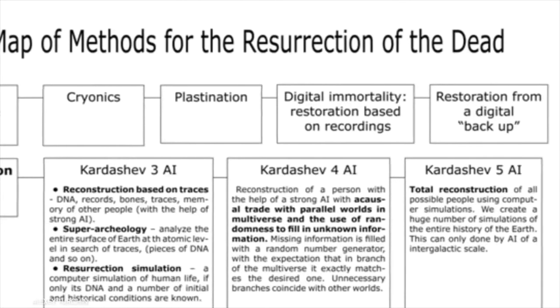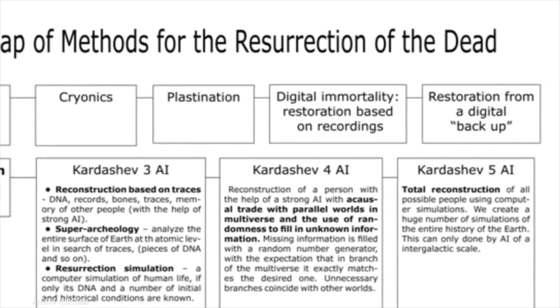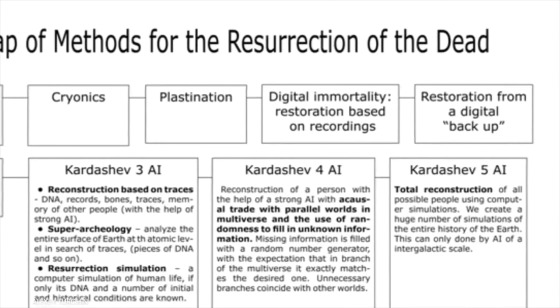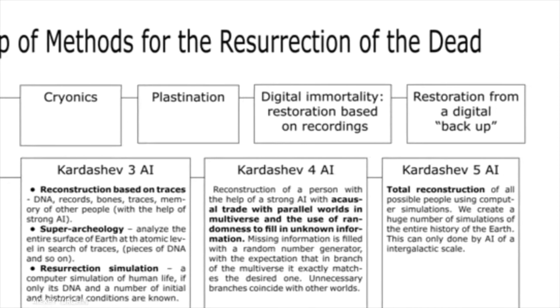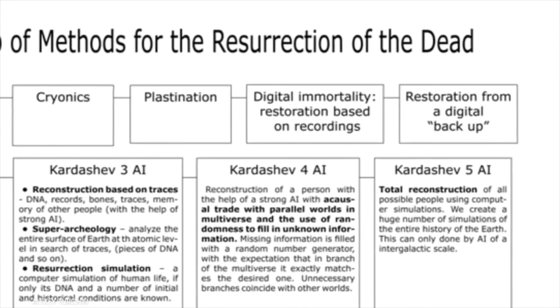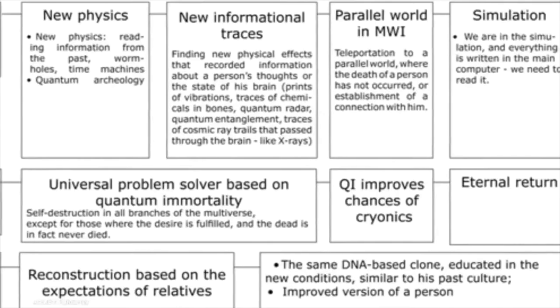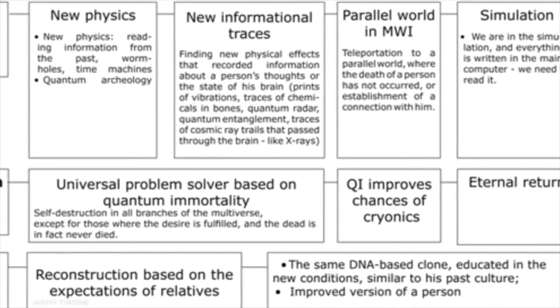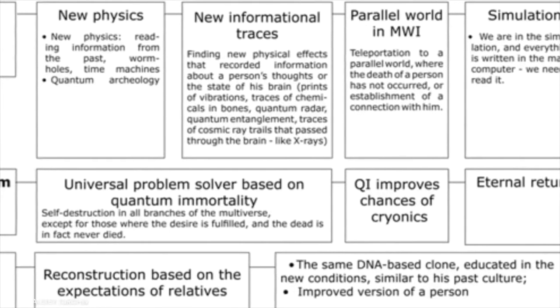This is Plan C of the Immortality Roadmap, a project Russian transhumanist and life extensionist Alexei Turchin has been working on since 2014. Turchin recently laid out the details in a paper he published with fellow transhumanist Maxim Chernyakov called 'Classification of Approaches to Technological Resurrection.'